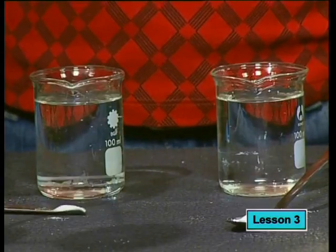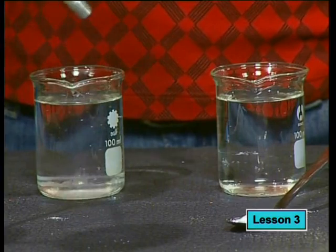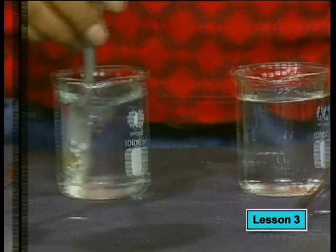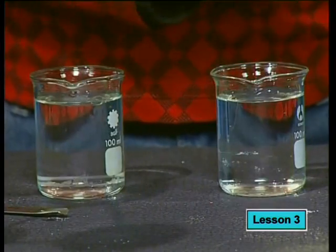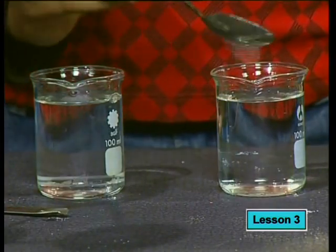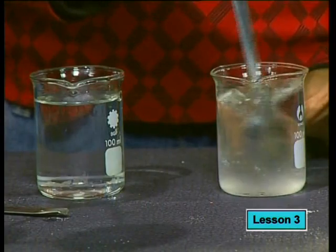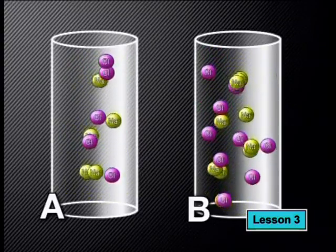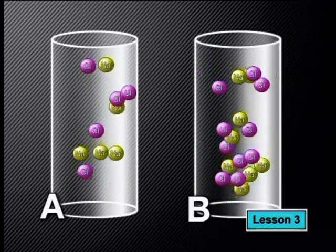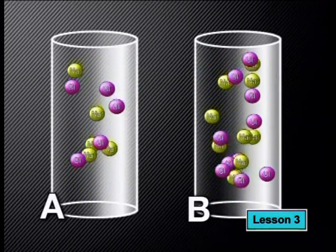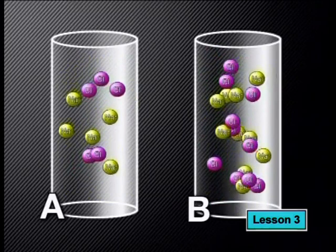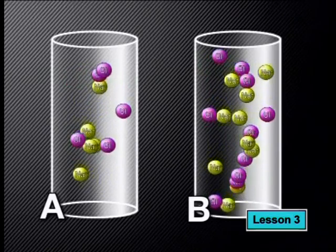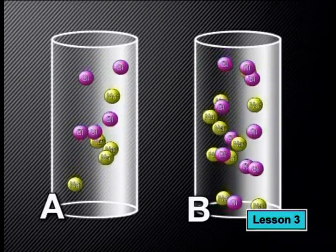When solution A was made, one gram of sodium chloride was dissolved in a volume of 100 centimeters cubed of water. But when solution B was made, four grams of solute were dissolved in the same volume of water. If we looked at these solutions on a microscopic level, we would see more sodium and chloride ions in solution B. In solution A the ions are quite far apart, while they are packed closer together in solution B.